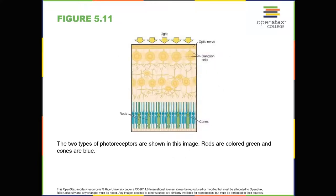After passing through the pupil, light crosses the lens, a curved transparent structure that serves to provide additional focus. The lens is attached to muscles that can change its shape to aid in focusing light that is reflected from near or far objects. In a normal sighted individual, the lens will focus images perfectly on a small indentation in the back of the eye known as the fovea, which is part of the retina, the light-sensitive lining of the eye.